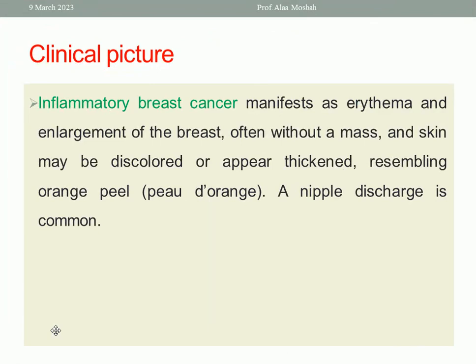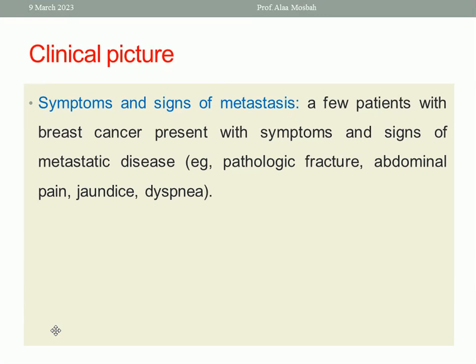Inflammatory breast cancer manifests as erythema and enlargement of the breast with peau d'orange appearance — the breast skin is dimpled like orange peel. Nipple discharge may also be present. Sometimes patients come late with symptoms and signs of metastasis, such as pathologic fracture, jaundice, abdominal pain, dyspnea, neurological manifestation, or brain metastasis.